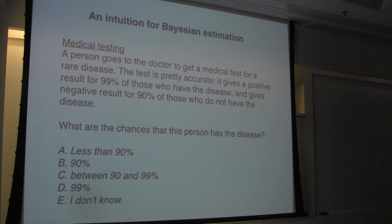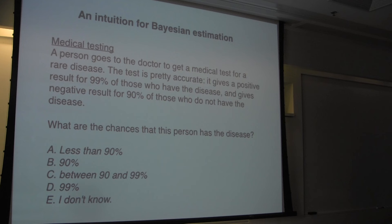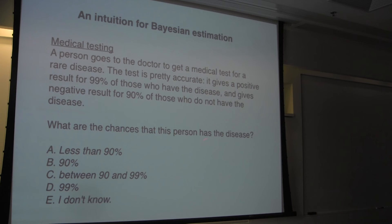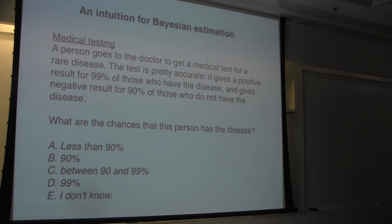Now, what are the chances that this person has the disease? The test comes out positive. Those who think less than 90%, hands up. Those who think 90%? Between 90% and 99%? So let's think a little through this to build intuition. The key to help you here is that you realize this is a rare disease. Let's put a number on it: rare means 2% of the population have this disease.